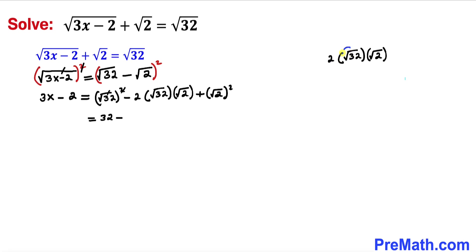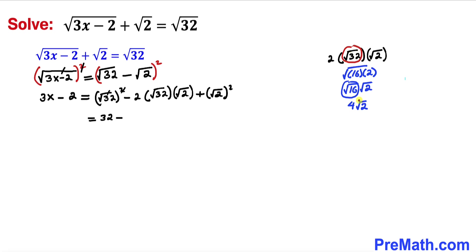Let's focus on square root of 32. This can be written as square root of 16 times 2, which breaks down to square root of 16 times square root of 2. Since square root of 16 is 4, square root of 32 is the same as 4 times square root of 2.